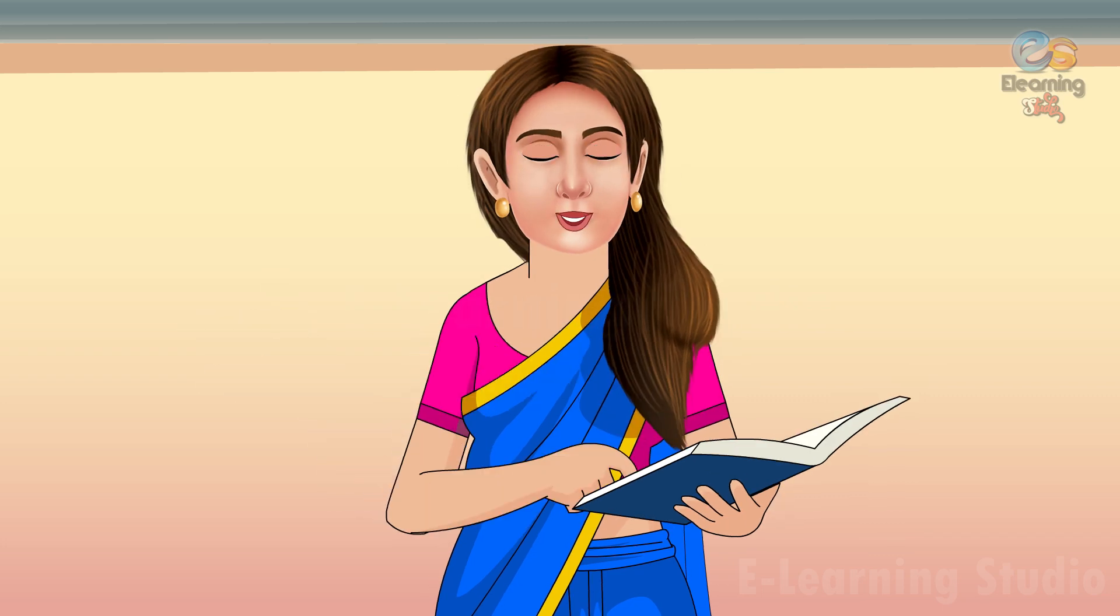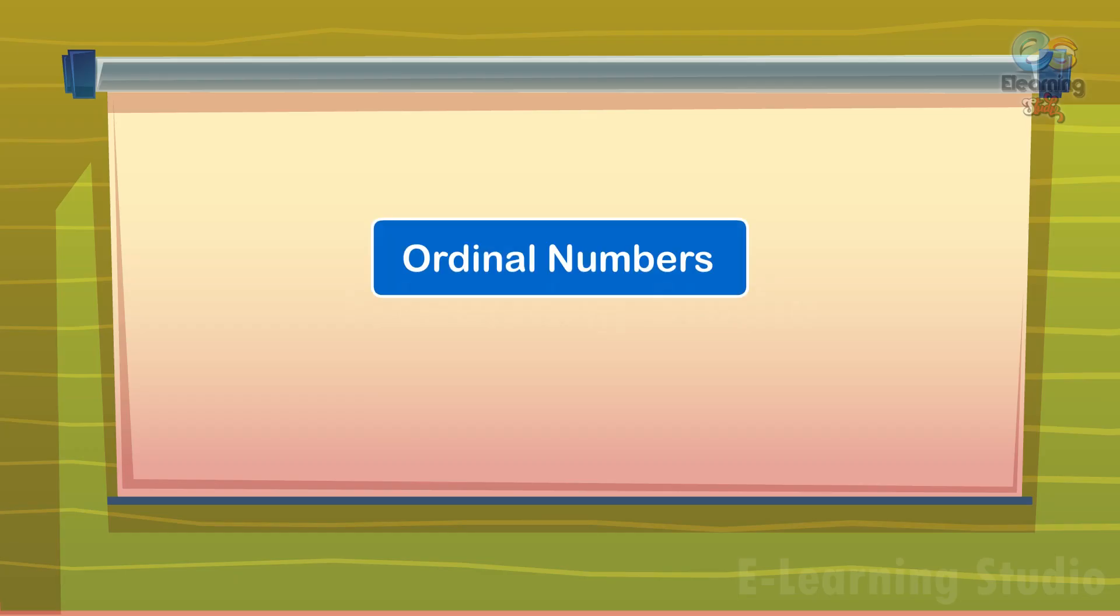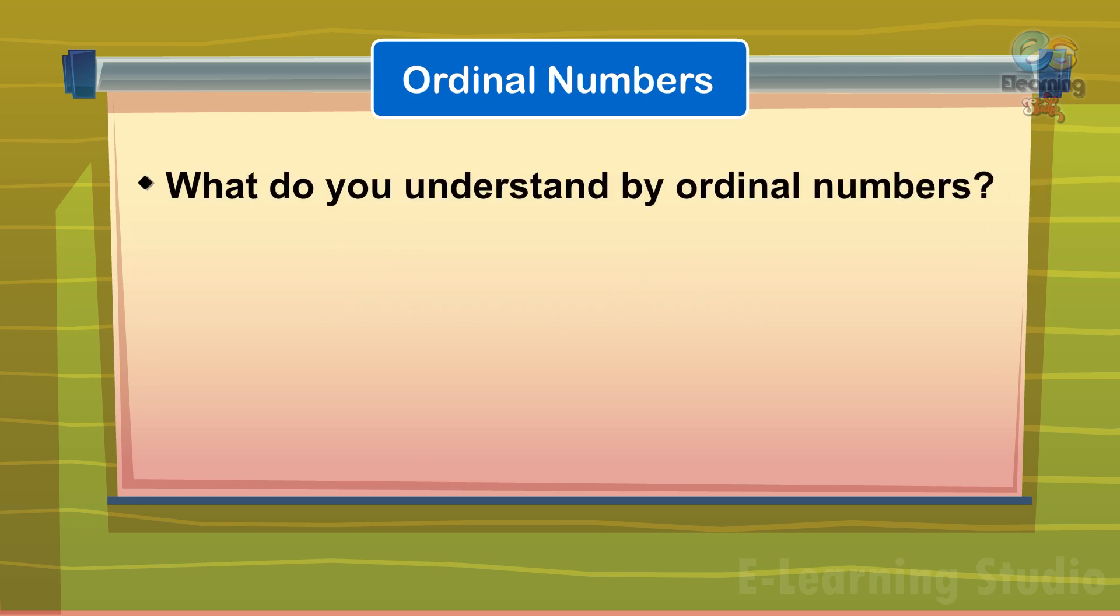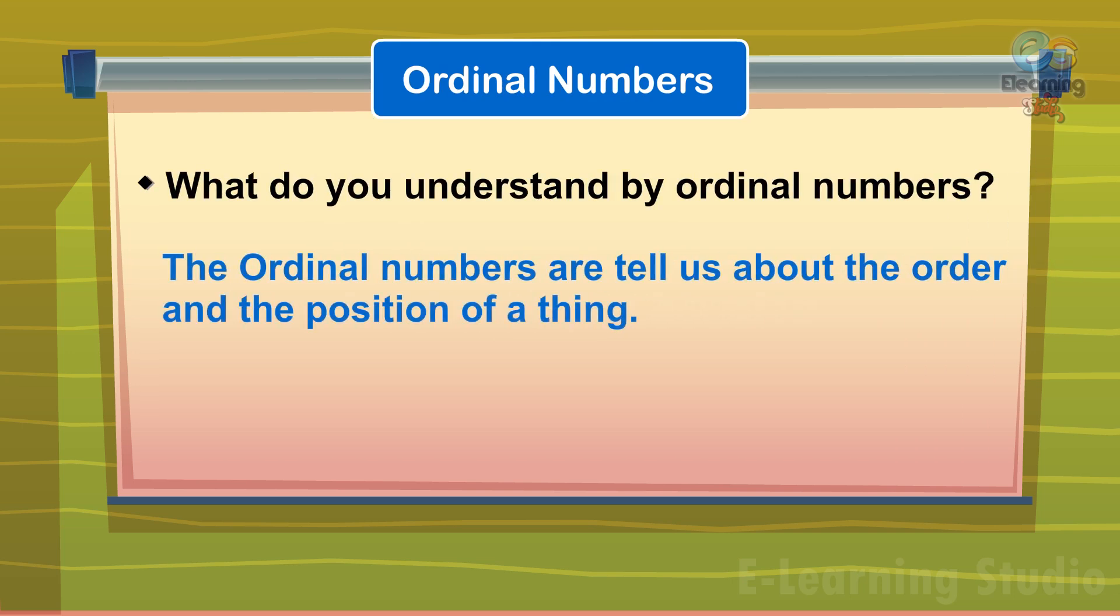Now move to the other concept which is Ordinal Numbers. Ordinal Numbers. Now tell me, what do you understand by Ordinal Numbers? The Ordinal Numbers tell us about the order and the position of a thing.